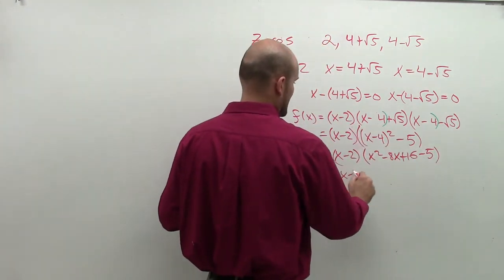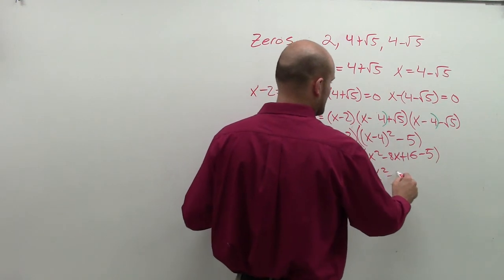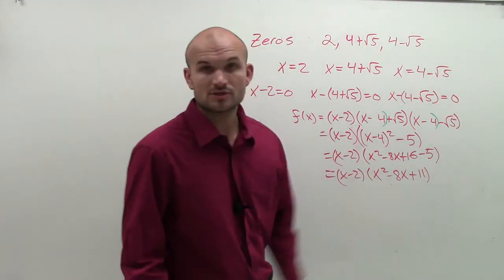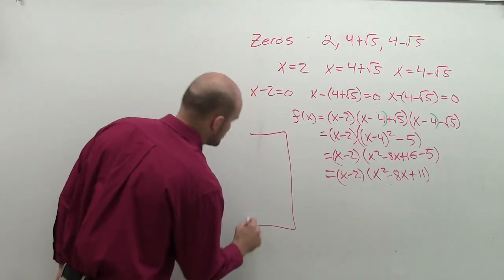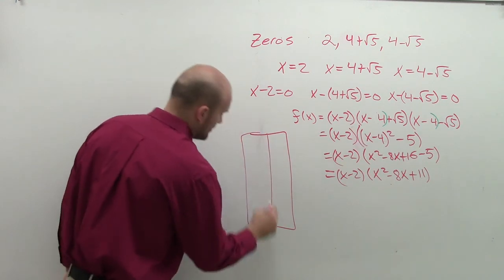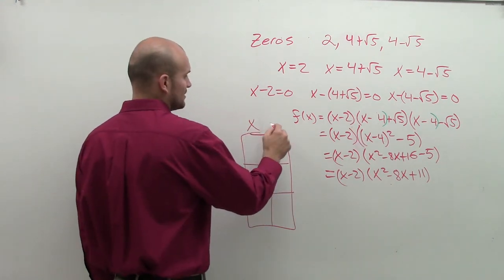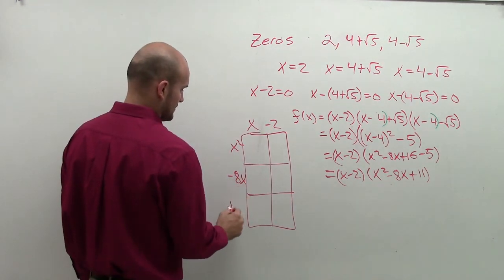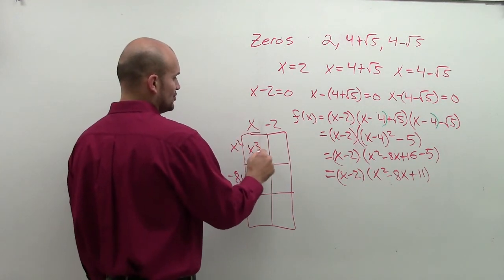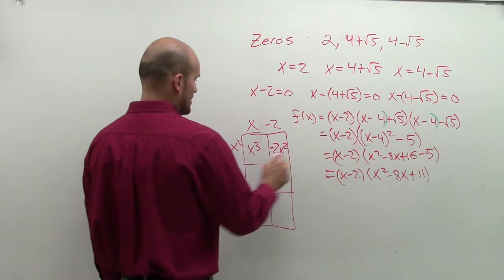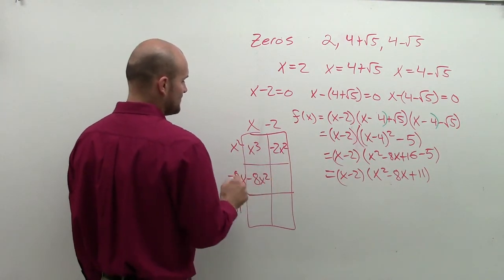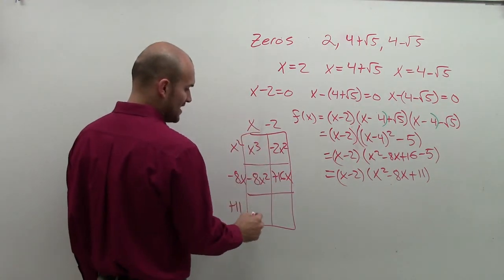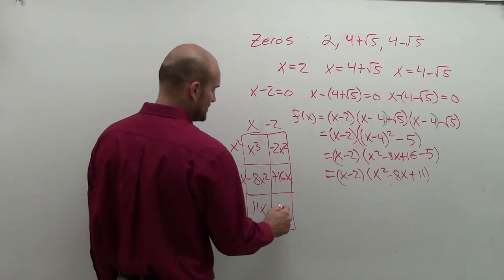Combine that, x minus 2 times x squared minus 8x plus 11. Now, I have to multiply a binomial times a trinomial. Going back to kind of some algebra 1, algebra 2 stuff, remember we can, if you're having trouble with that, you can always like label one binomial here and label the other one here. x squared times x is x cubed, x squared times negative 2 is negative 2x squared, x times negative x is negative x squared, negative 8x times negative 2 is positive 16x, x times 11 is 11x, 11 times negative 2 is negative 22.